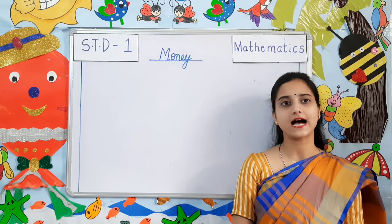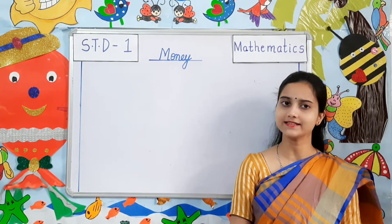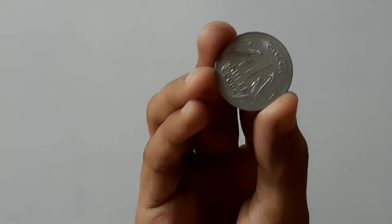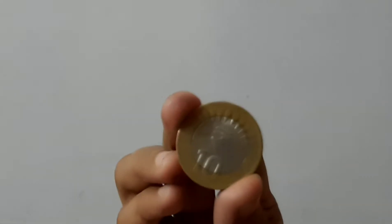Money is either made up of metal coins or papers called as notes. The different coins used in India are the 1 rupee coin, 2 rupee coin, 5 rupee coin, and 10 rupee coin.